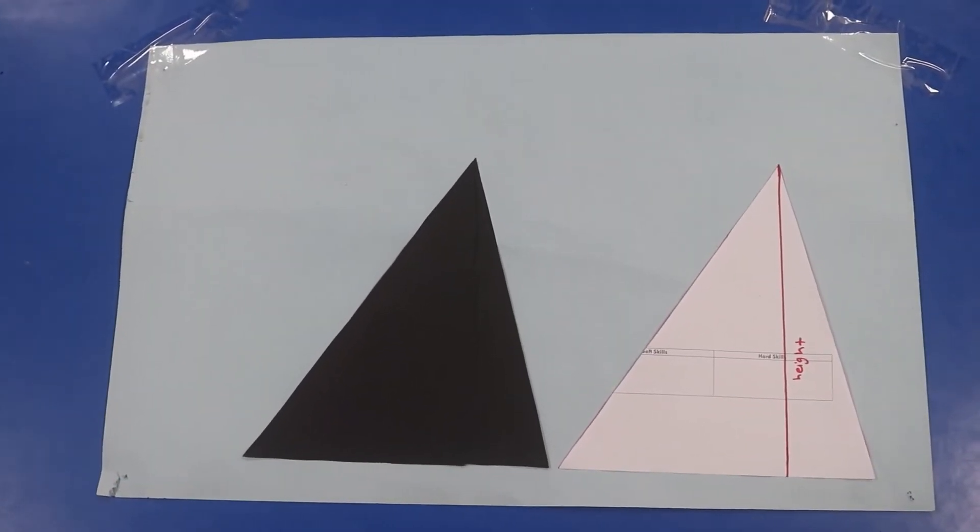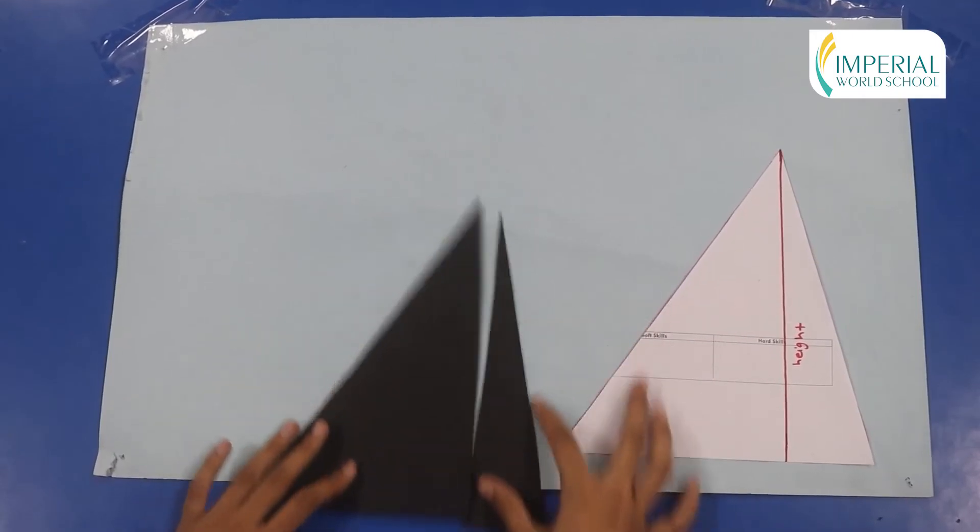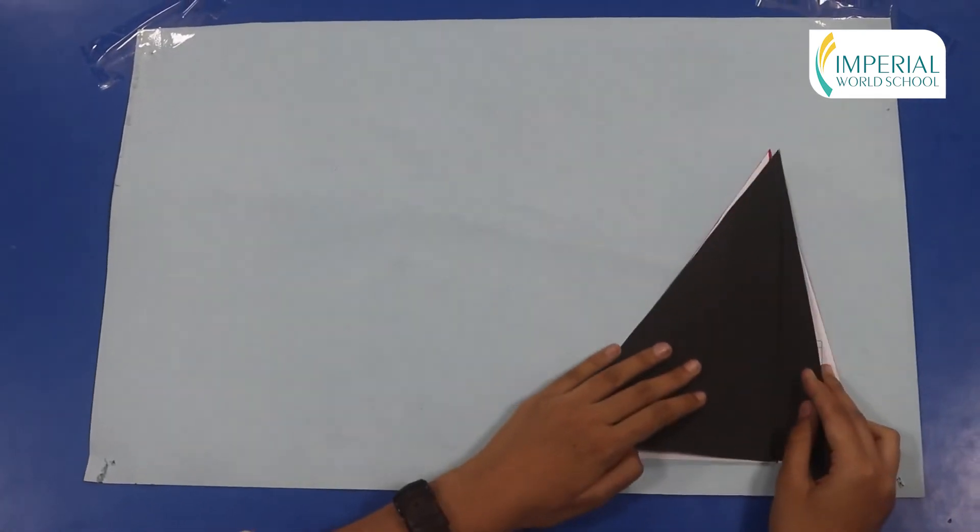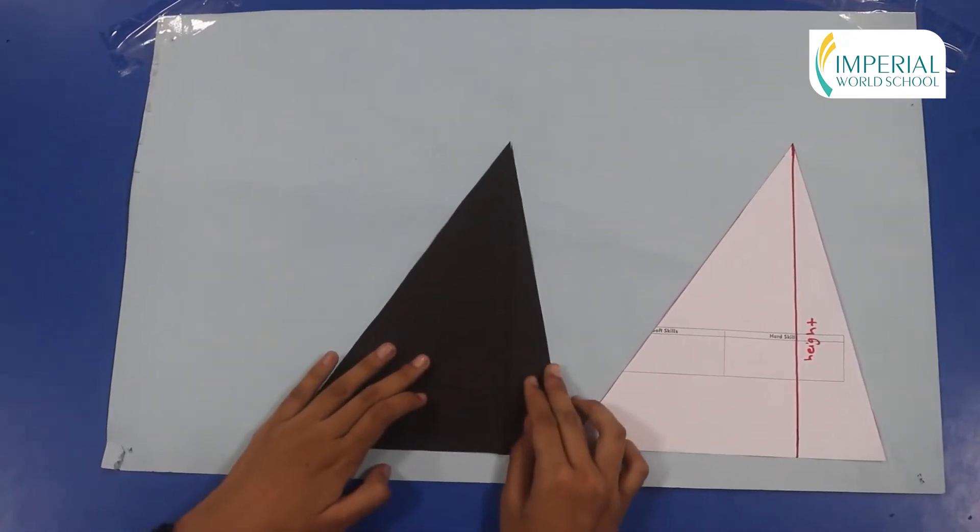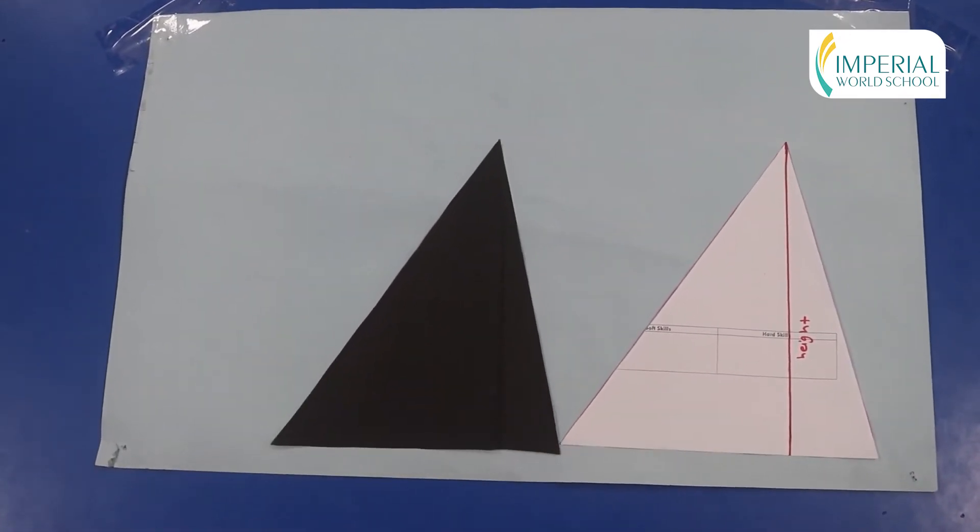So here I have two triangles with me and as you can see they perfectly overlap each other. What does that mean? Yes, it means that they are congruent.